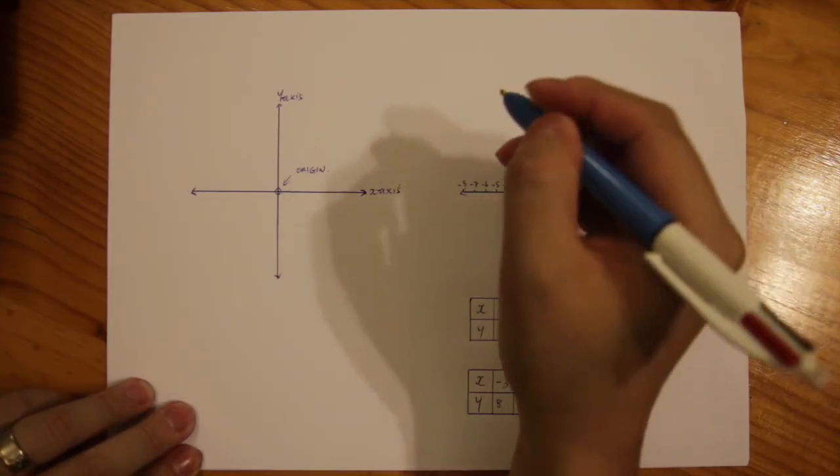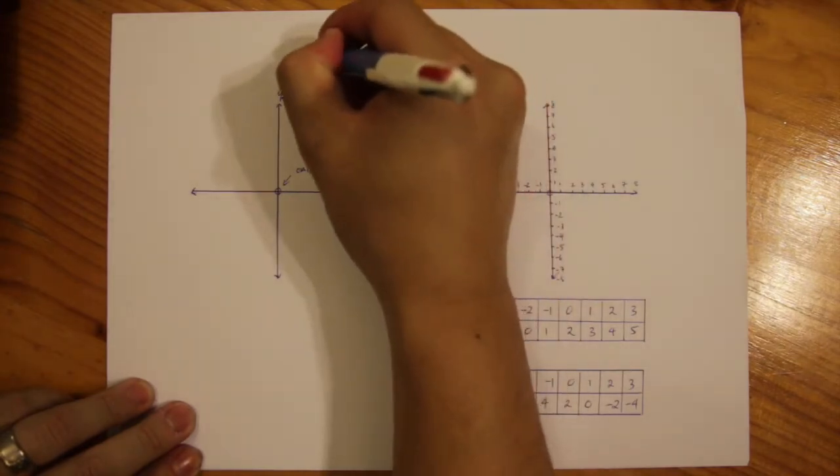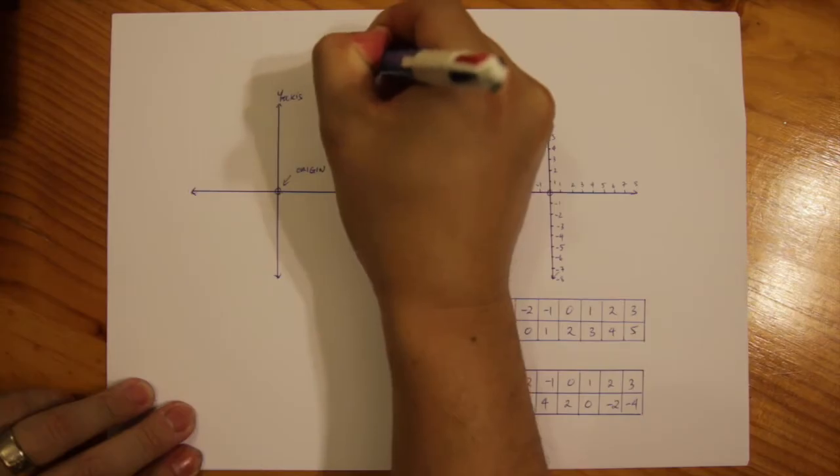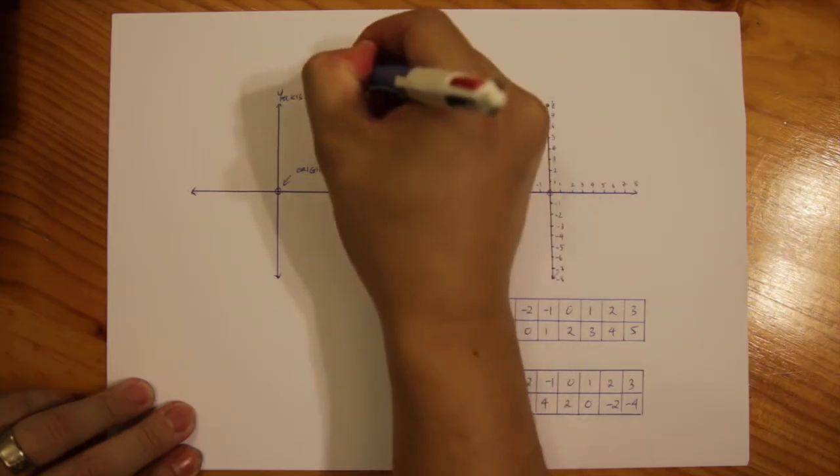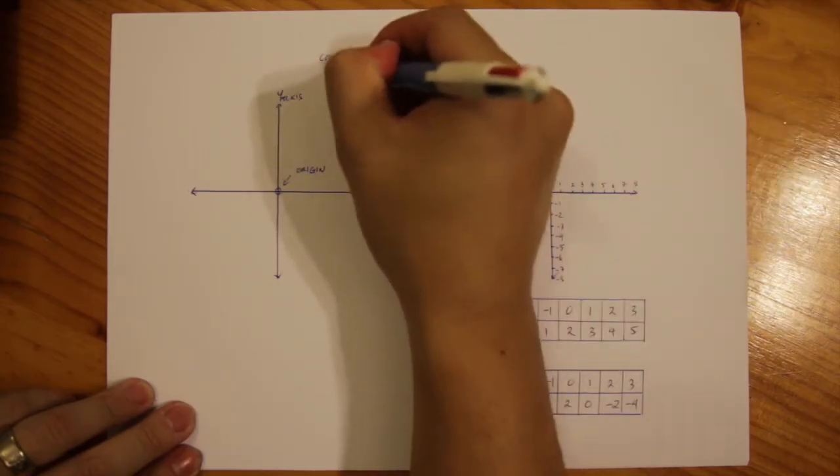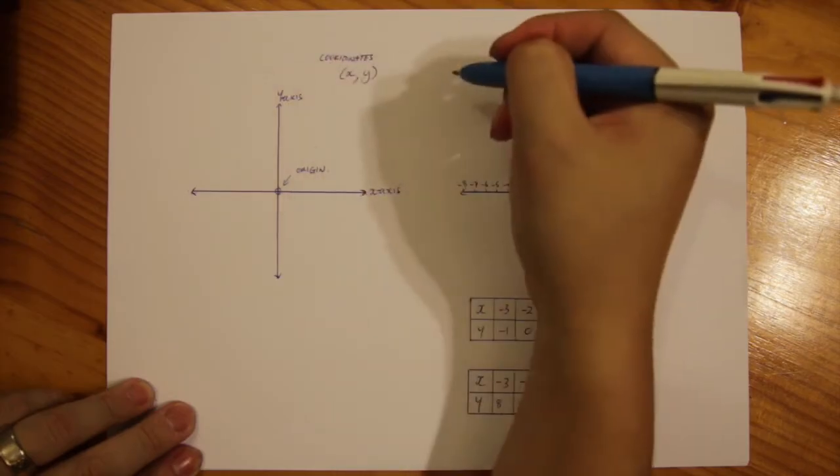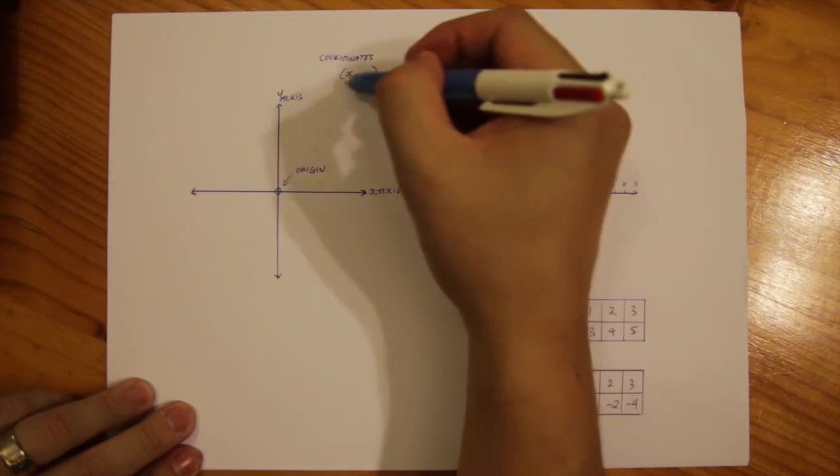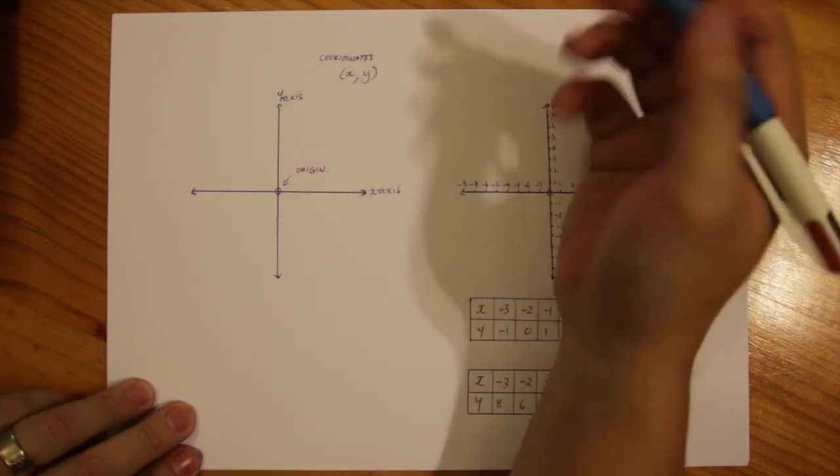The other thing that you need to remember is your coordinates are represented with the value of x first and then the value of y second. Simple way to remember alphabetical order will do the trick.